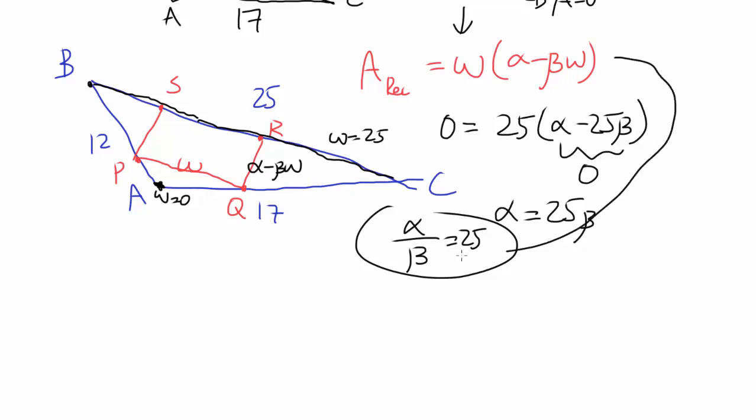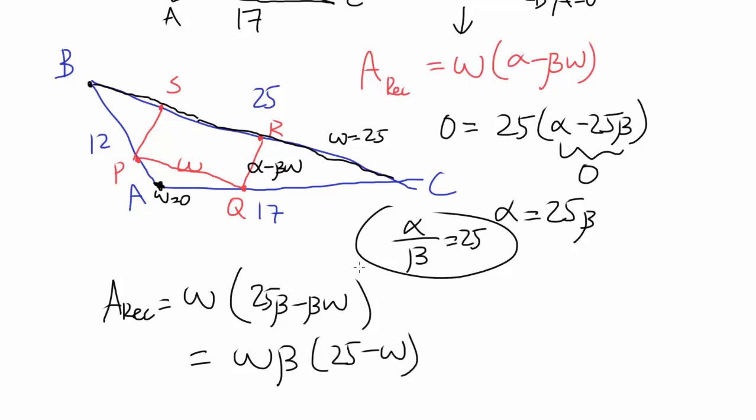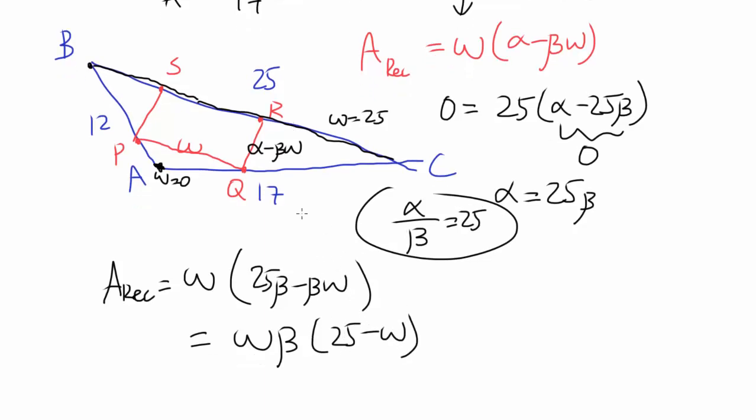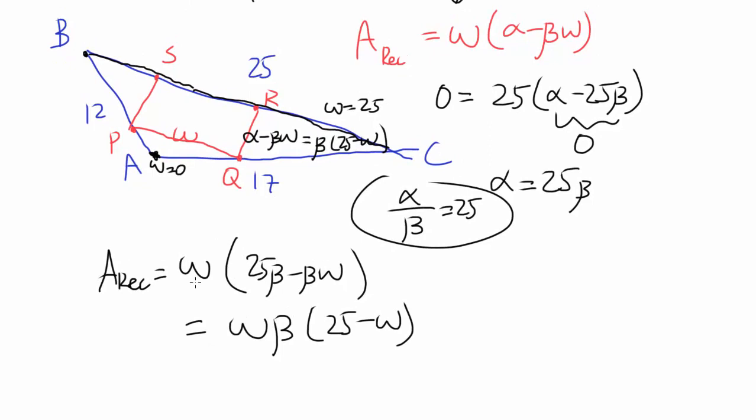So why don't we just rewrite this equation in terms of beta? So area of rectangle is W times our alpha is going to be 25 beta, and we have minus beta W. We can factor out beta. So we have W times beta times 25 minus W. So we know this side length is beta times 25 minus W. So we have gone quite far.